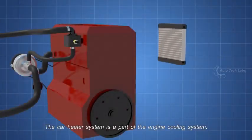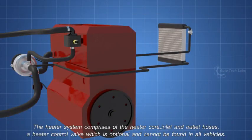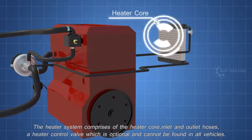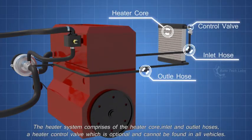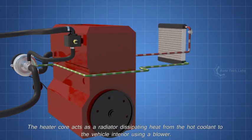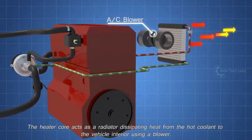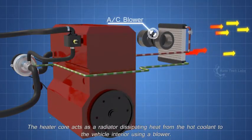The car heater system is a part of the engine cooling system. The heater system comprises of the heater core, inlet and outlet hoses, a heater control valve which is optional and cannot be found in all vehicles. The heater core acts as a radiator, dissipating heat from the hot coolant to the vehicle interior using a blower.